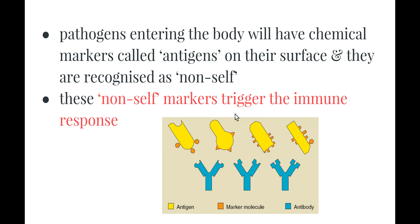Pathogens entering the body will have chemical markers, which are the antigens on their surface. The great thing is our body is able to recognize them as non-self, and these non-self markers are the ones that trigger the immune response.